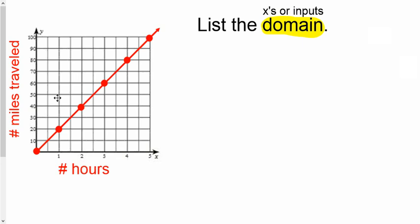So domain is just a list of all your x's. When you look at this graph, take a look at your x-axis on here and find out some good spots for the dots. Or if there's no line, just take the x values from the dots.